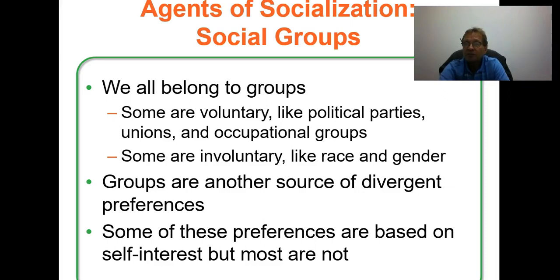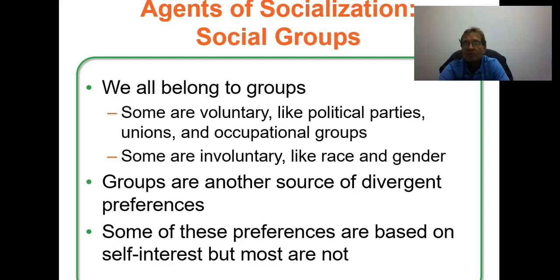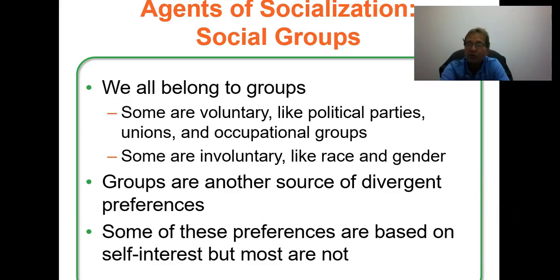Groups are very influential agents of socialization — political party affiliation, union membership, or occupational associations. Others are involuntary: we can't control our race or gender; we were born with them. This is another source of socialization. Self-interest also matters, as do interest groups, which we'll discuss in Chapter 12.